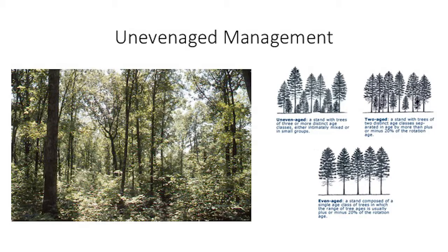The big key difference here is that with uneven age management, what we're trying to do is manage multiple age classes - at least three on the landscape - rather than one, which is typically what we do in pine management, or two, which is kind of what we do in a shelter wood natural regeneration system. So with uneven age management, you're going to have a lot more complexity in terms of the structure of your stand.